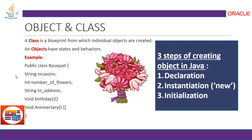A class is a blueprint from which individual objects are created. An object has states and behavior. There are three steps to creating an object: declaration, instantiation, and initialization. For example, a class called Bouquet has a string for occasion, an integer for number of flowers, and a string for address. Combining all these features in a class makes it encapsulation, and the class provides a blueprint or template you can reuse for any other occasion.